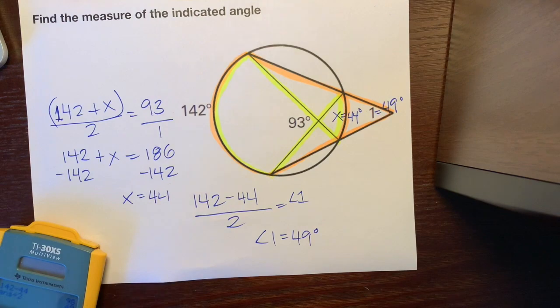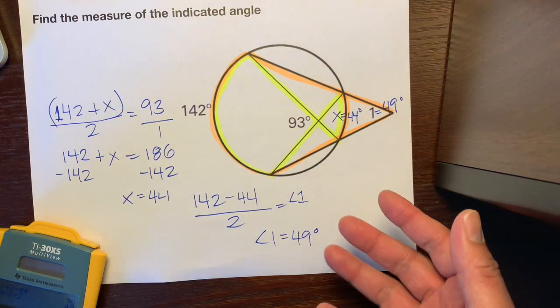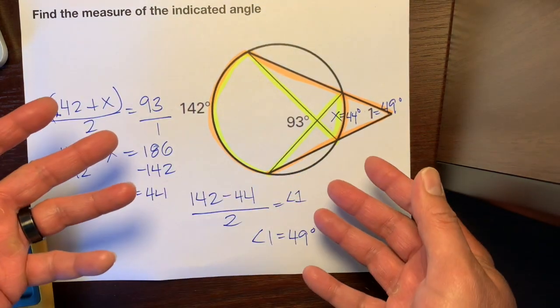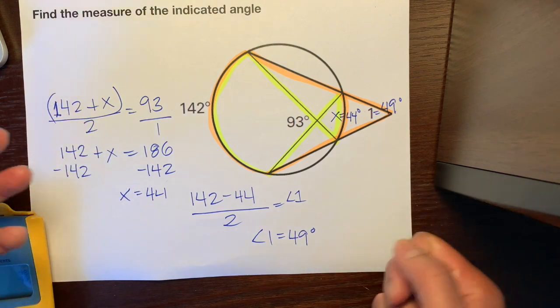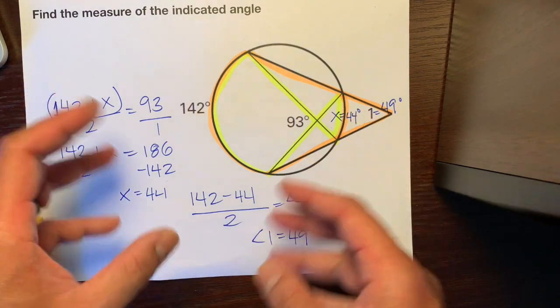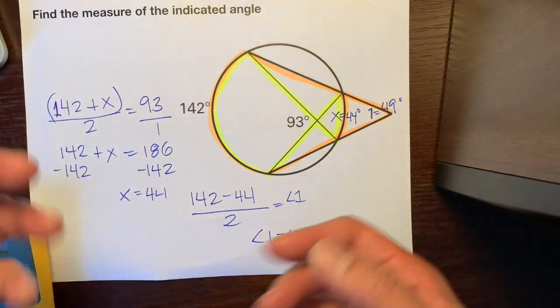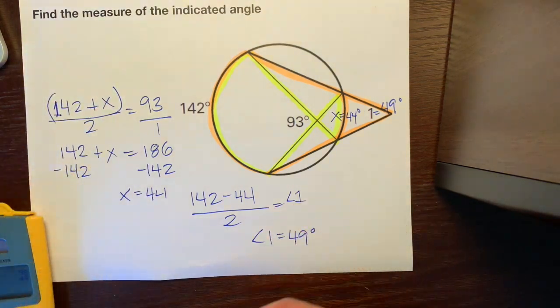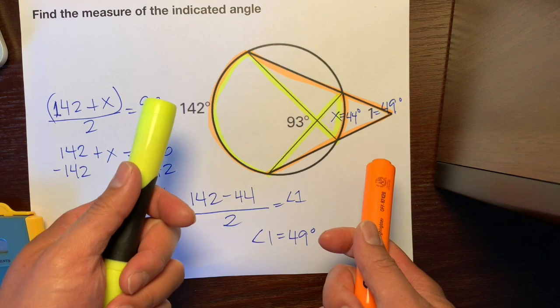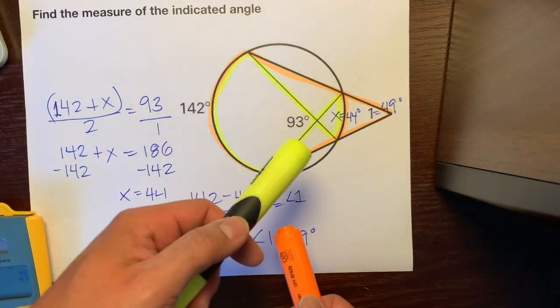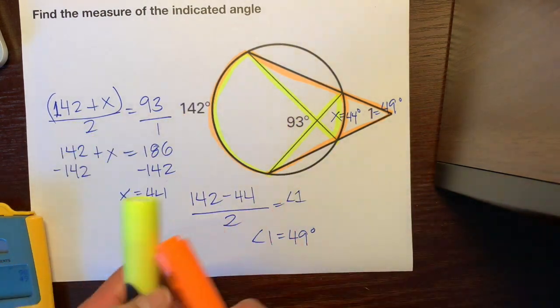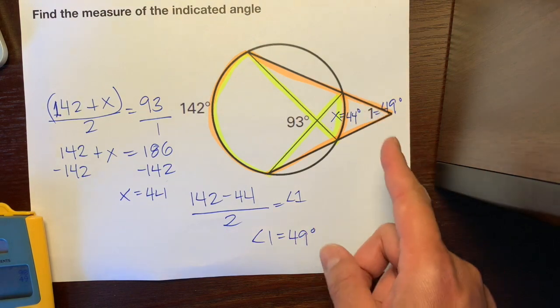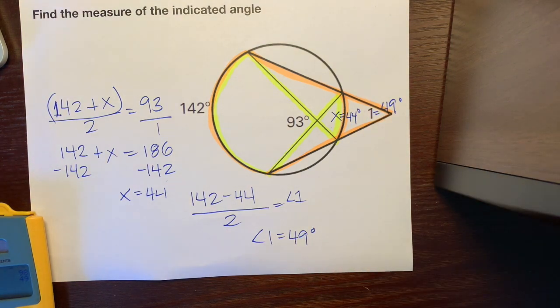Alright, so hopefully that helped you out. So again, don't get overwhelmed when you see a lot of lines and a lot of numbers and everything. Just try to focus on what you need to focus on and use a highlighter or two highlighters so you can break it down into smaller steps to help you get that final and correct answer, which is 49. Hope this helps, have a great day.